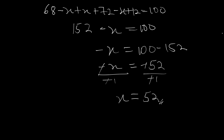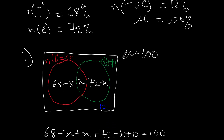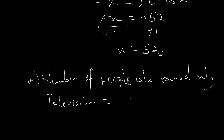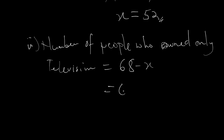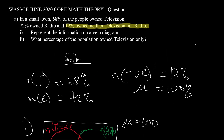The number of people who owned both television and radio is 52. From the question, we need the percentage who owned television only, which is just that left-hand portion of the TV circle. The number of people who owned only television equals 68 minus X, and since X = 52, that's 68 minus 52 = 16. Since everything is in percentages, the answer is 16%. This brings us to the end of question 1A.